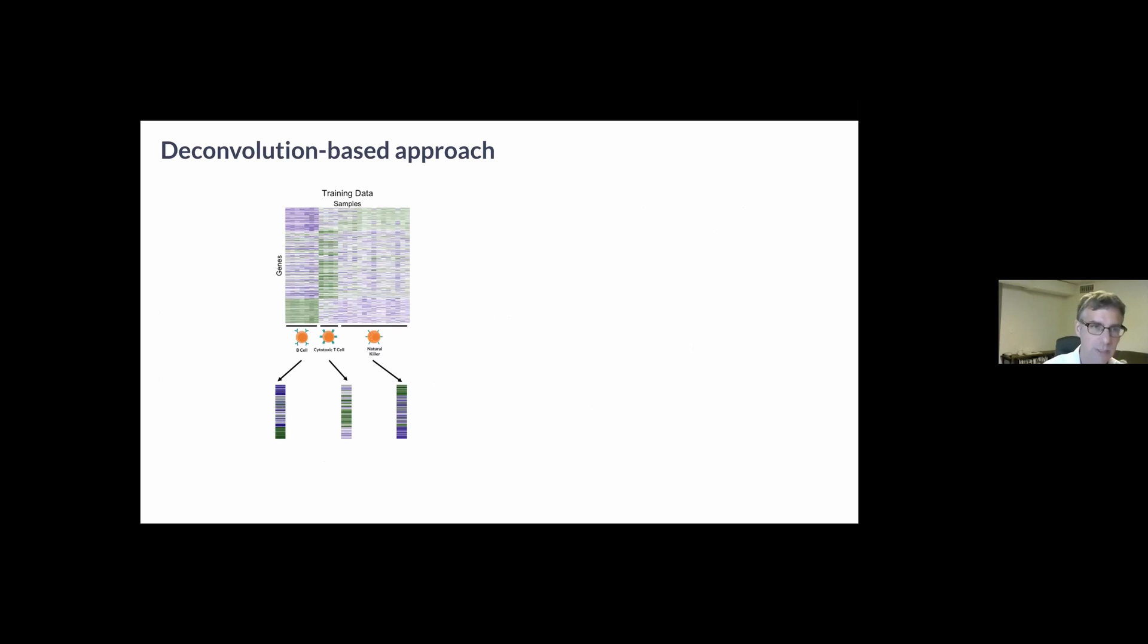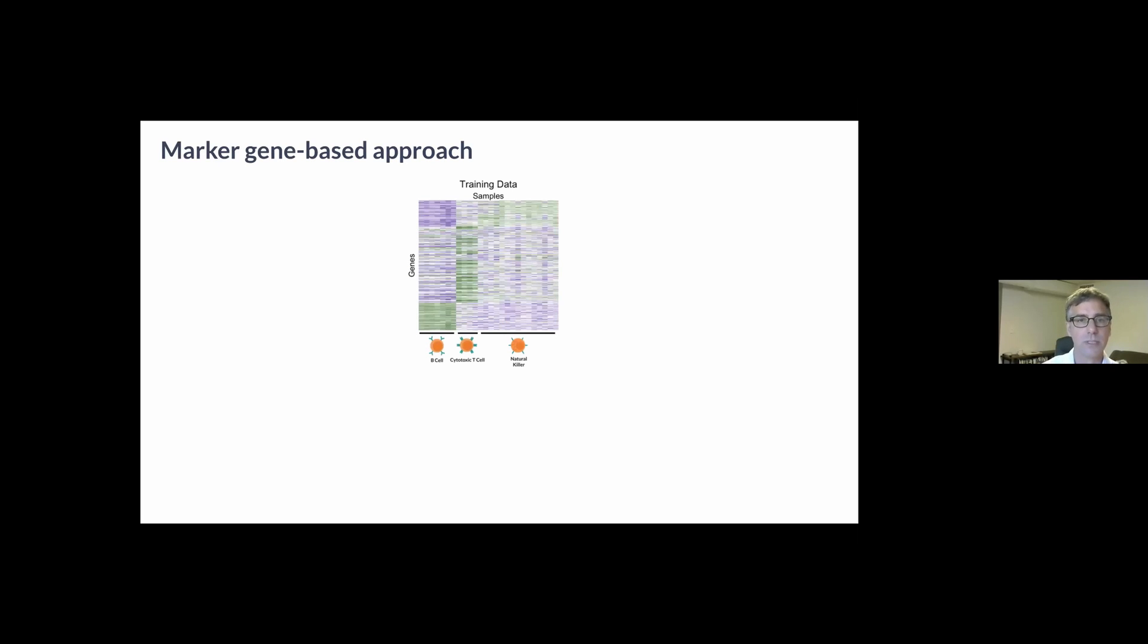Deconvolution approaches including CIBERSORTx and CIBERSORT define expression profiles for cell types of interest, for example B cells, cytotoxic T cells, and NK cells. Generally these profiles include only genes that are differentially expressed across cell types. These profiles are often combined into a signature matrix, and then we can look at bulk expression of an admixture of cells and describe them as a linear combination of these profiles where the coefficients are the proportions of the corresponding cell types.